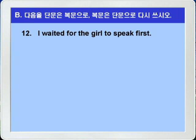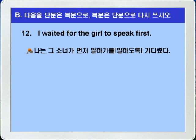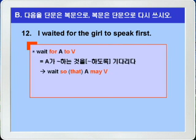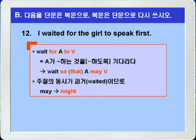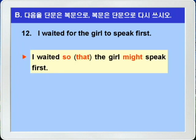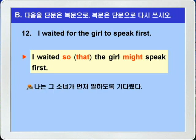12번. 'I waited for the girl to speak first.' 나는 그 소녀가 먼저 말하기를 기다렸다. 'Wait for A to 부정사'는 복문으로 'wait so that A may 동사원형'으로 바꿔 쓸 수 있습니다. Waited로 과거이기 때문에 may가 might가 됩니다. 정답: 'I waited so that the girl might speak first.' 나는 그 여자가 먼저 얘기하도록 기다렸다.